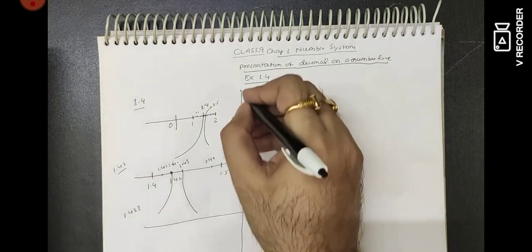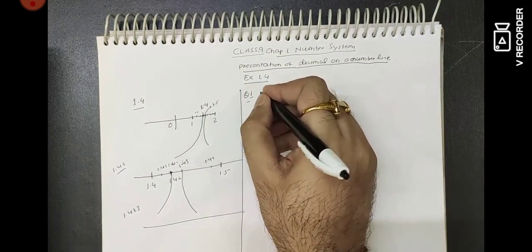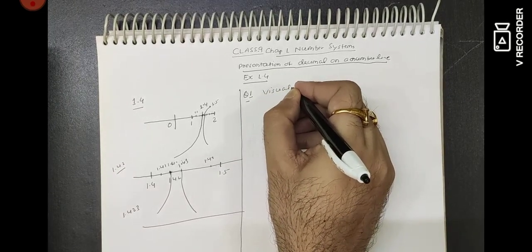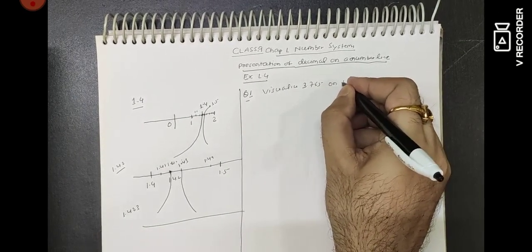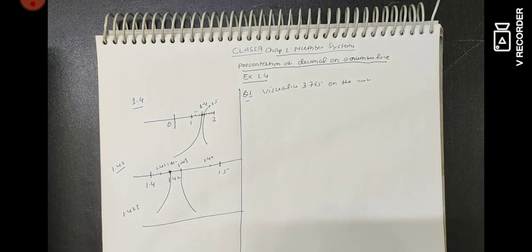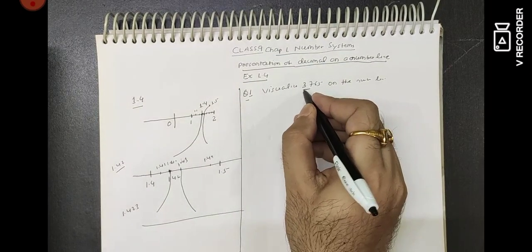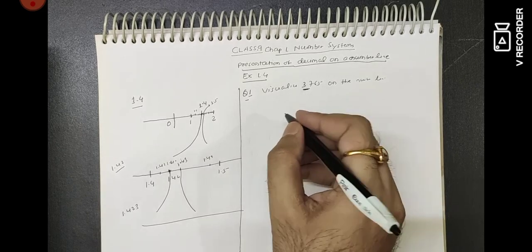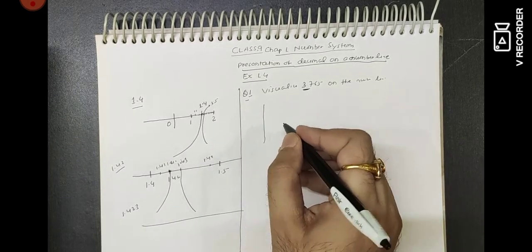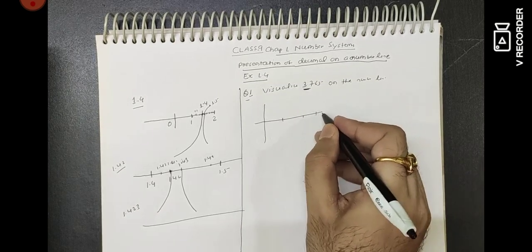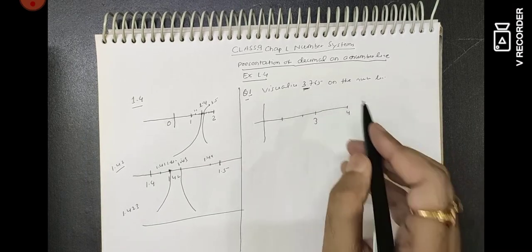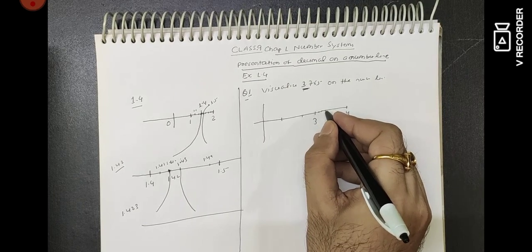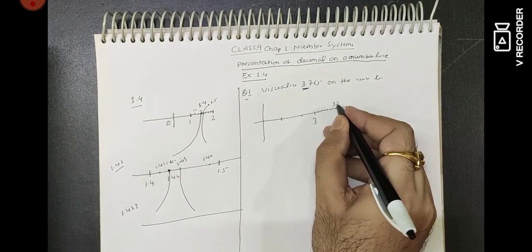Let's solve Question Number 1: visualize 3.765 on the number line. As I explained, first show 3.7. The number is bigger than 3 and smaller than 4, so you divide the segment from 3 to 4 into 10 parts. The 7th division will be 3.7, so 3.7 will come here.